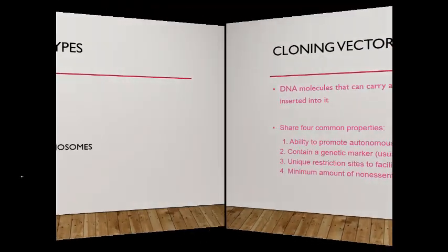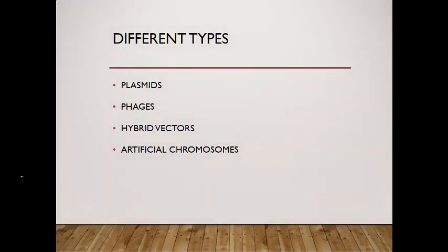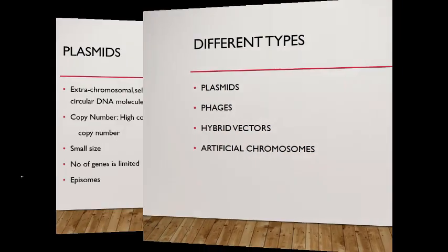What are the different types of cloning vectors? Number one: plasmids. Number two: phages. Number three: hybrid vectors. And artificial chromosomes.